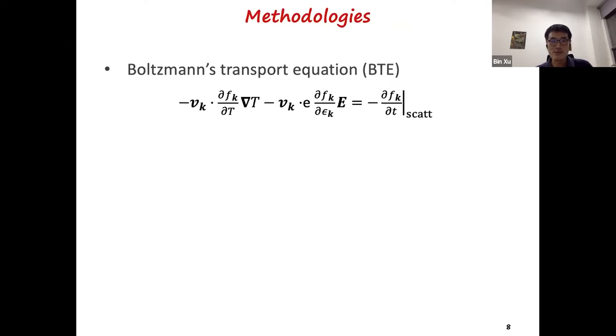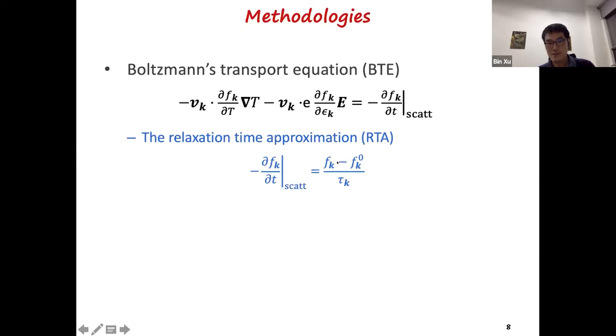Let me briefly go through these two methods so you can see the difference. For bulk material with diffusive transport, the standard approach is to solve the Boltzmann transport equation. On the left side, we have two drift terms due to the temperature gradient and the electric field. On the right side, we have the scattering term, which can bring the system back to equilibrium. If we take the relaxation time approximation, the scattering term can be approximated as a finite difference, which is the deviation of the distribution function from equilibrium divided by a K-dependent relaxation time tau k. The calculation of tau k is the most difficult part. It is indeed possible nowadays to do it from ab initio, but it's much simpler if we ignore the K-dependence of the tau and treat it as a constant. This is much more popular.